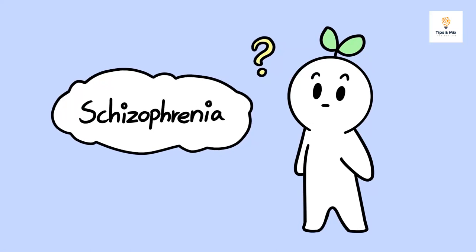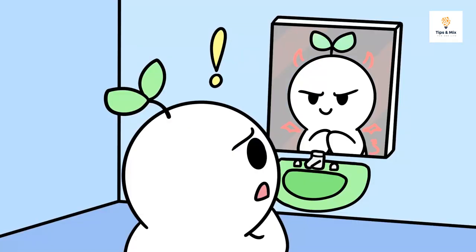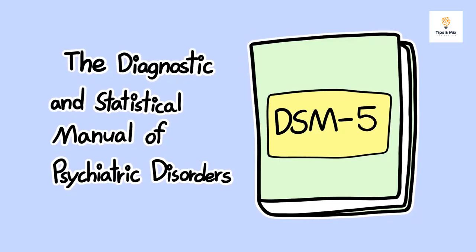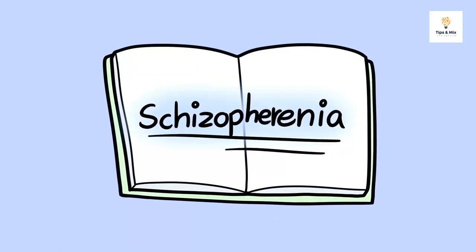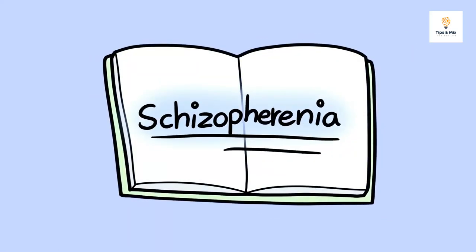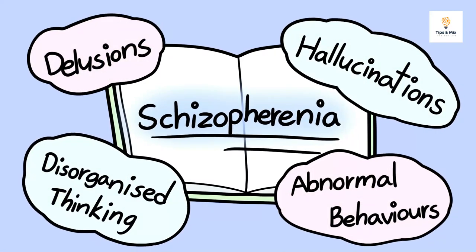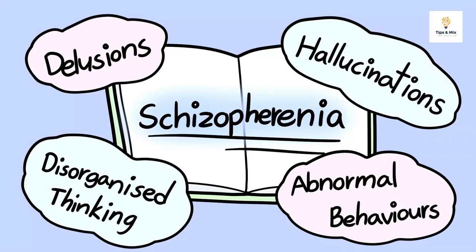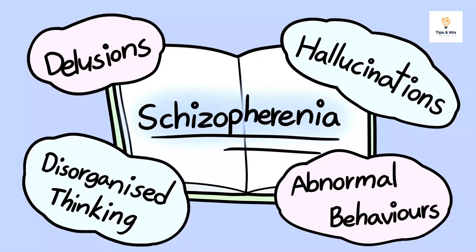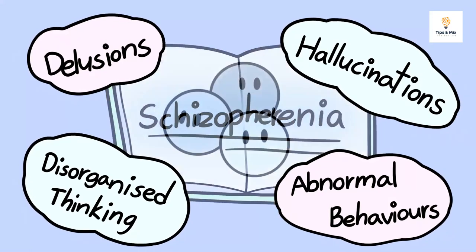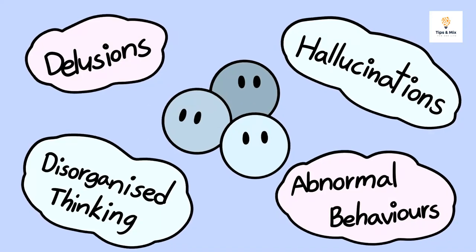When you think of schizophrenia, what comes to mind? Does having multiple or split personalities make it schizophrenia? The Diagnostic and Statistical Manual of Psychiatric Disorders, also known as DSM-5, defines schizophrenia as a mental disorder consisting of a constellation of symptoms such as delusions, hallucinations, disorganized thinking, and abnormal behaviors. No single symptom alone is characteristic of the disorder, and people exhibit different symptoms.